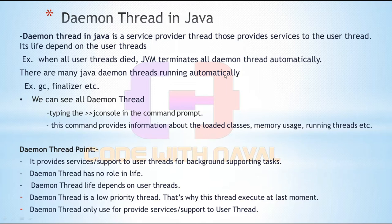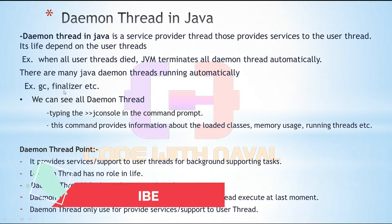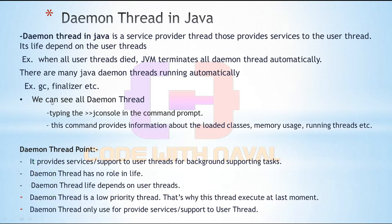There are many Java Daemon threads running automatically. Examples include garbage collection and finalize — these are Daemon threads running in the background. We can see all Daemon threads by using the command jconsole. We can simply open a command prompt and type jconsole, and there we get all background Daemon threads. This command provides information about loaded classes, memory usage, running threads, etc.